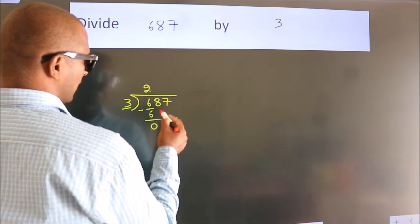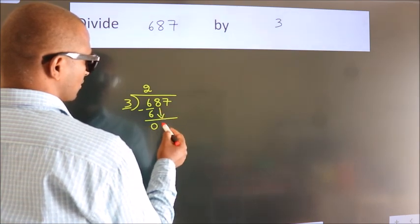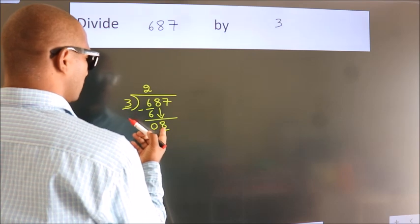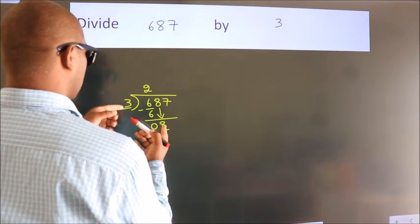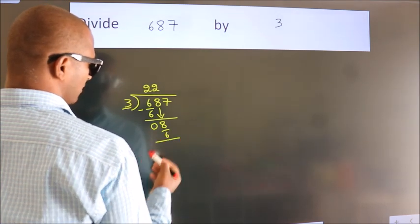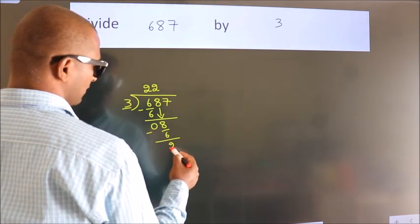After this, bring down the beside number. So 8 down, so 8. A number close to 8 in the 3 table is 3 times 2, which is 6. Now we subtract. We get 2.